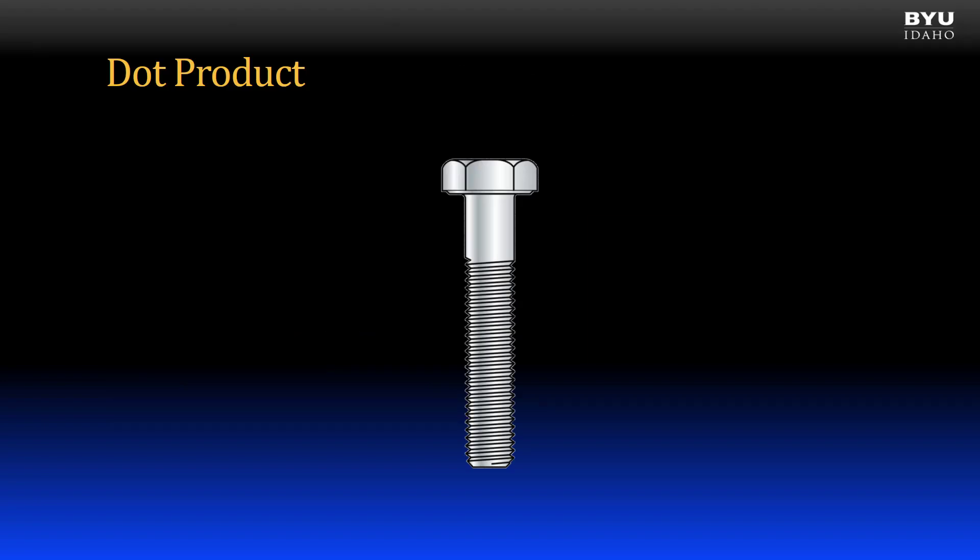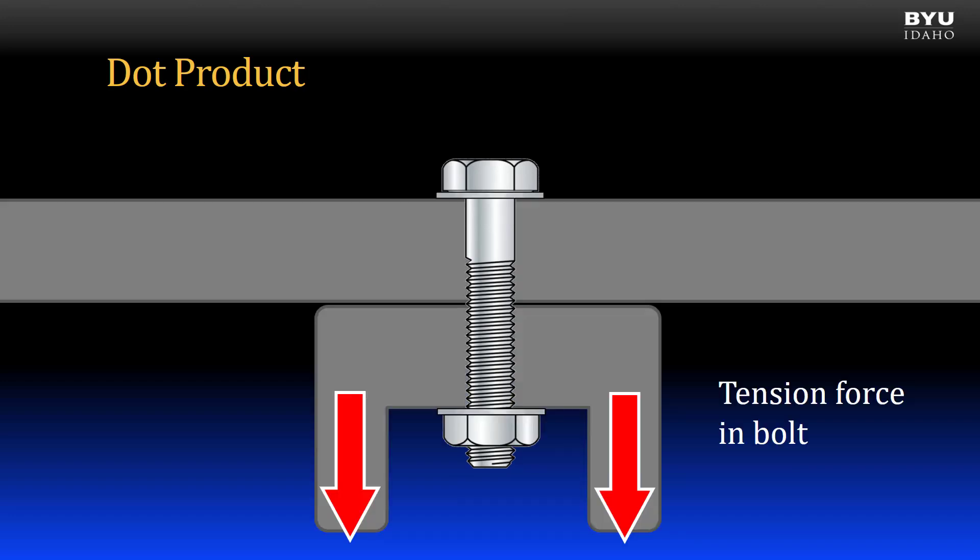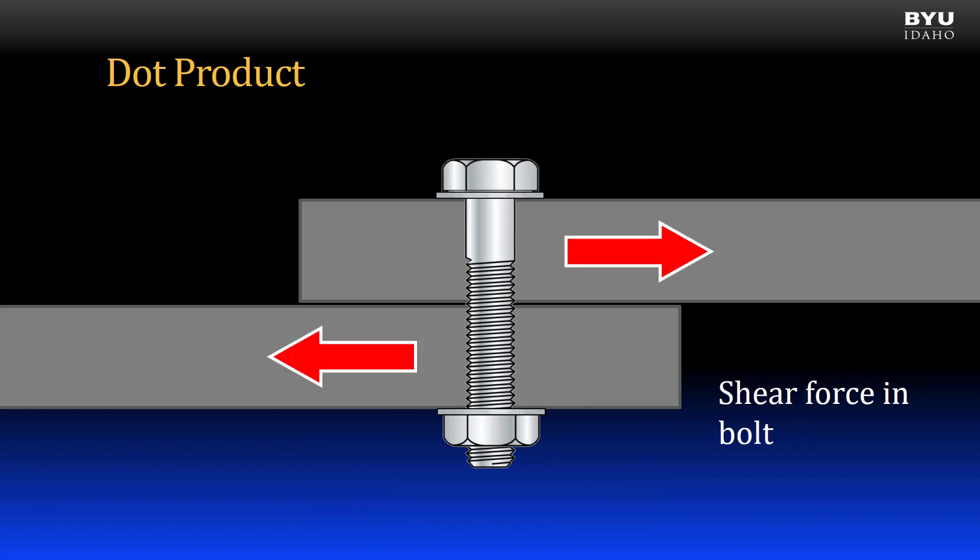Structural bolts. Bolted connections are used all the time and we have engineering methods for designing bolted connections. One of the major aspects governing the design of a bolted connection is the determination of the loading condition on the bolt. Generally bolts are subjected to one type of load. For example, the load might be pulling on the bolt shank. We call this a tension load. Or the load might be trying to shear the bolt into two or more pieces. We say this bolt is laterally loaded or loaded in shear.